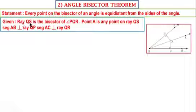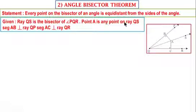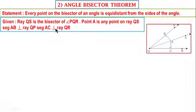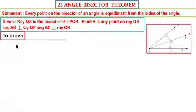Given: Ray QS is the bisector of angle PQR. Point A is any point on ray QS. Segment AB is perpendicular to ray QP. Segment AC is perpendicular to ray QR. To prove: Segment AB is congruent to segment AC.